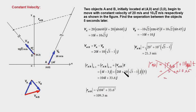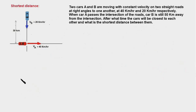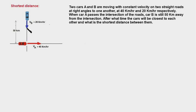Now we move on to case 2. In this problem, car A is traveling from west to east at 40 km/h and car B is traveling from north to south at 20 km/h. These two roads intersect perpendicularly. At a certain instant, car A reaches the intersection point but car B is still 50 km away. We have to find the shortest distance between the two cars and the time at which that shortest distance occurs.